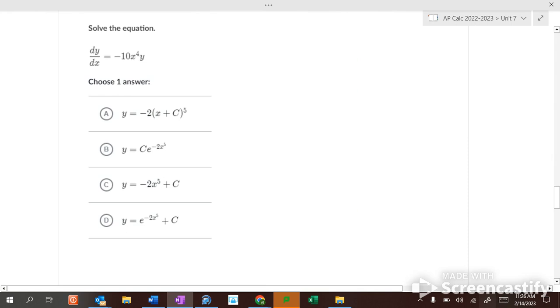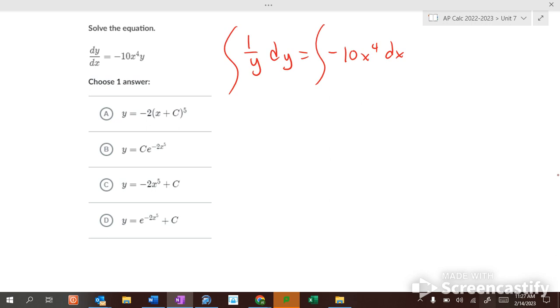This one, this one's a very important one for what we have coming up. What's the first step? Multiplied by y and multiplied by dx. So you get 1 over y dy equals negative 10x to the 4th dx. Integrate. What's the integral of 1 over y? The ln of y equals, what's the integral of this? Negative 2x to the 5th. Negative 2x to the 5th plus c.